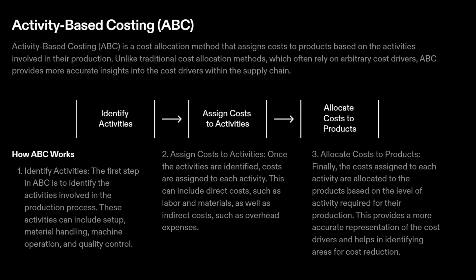Step 2: Assign Costs to Activities. Once the activities are identified, costs are assigned to each activity. This can include direct costs, such as labor and materials, as well as indirect costs, such as overhead expenses.